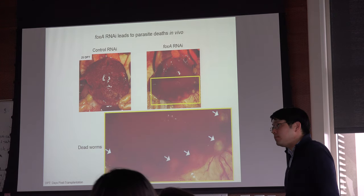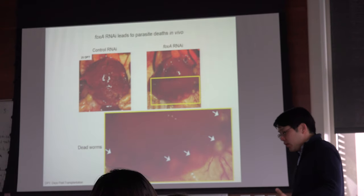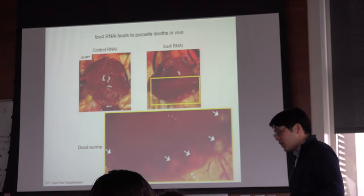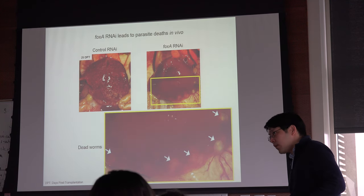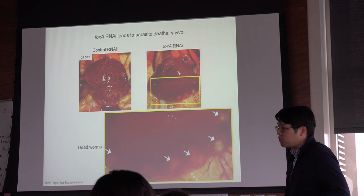Regarding where the worms are put in: we open the mouse, and there's a particular vein in the cecum that's big enough to inject into, and we inject them directly into the bloodstream.